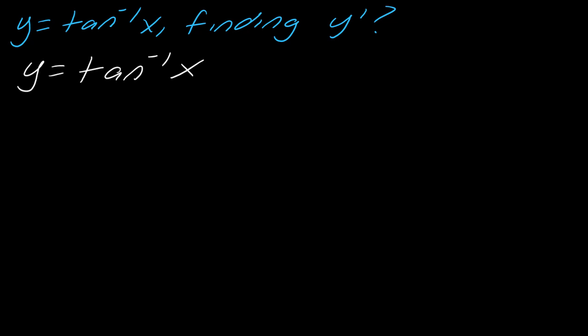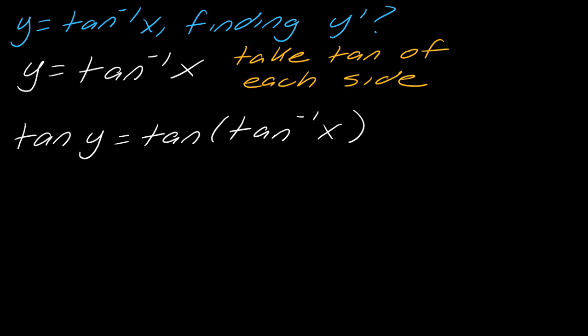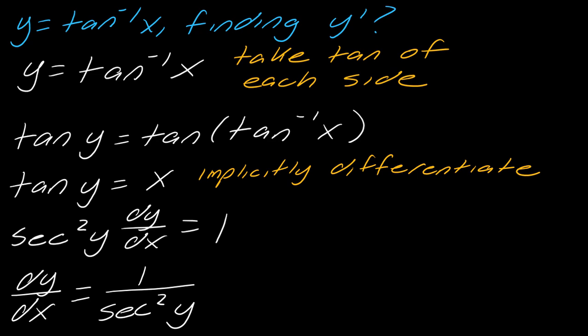Now let's talk about how to find the derivative of inverse tangent. Once again, we don't know how to take this derivative as is, so we're going to use a similar trick. This time we take the tangent of each side. If I do that, by the inverse function property, tangent of inverse tangent drops out, leaving tangent of y equals x. We can work with this — so we implicitly differentiate. Taking the derivative gives secant squared y times dy/dx equals one, and solving for dy/dx gives one over secant squared y.